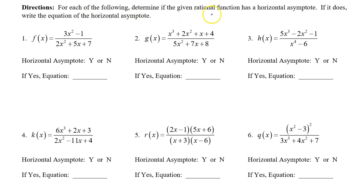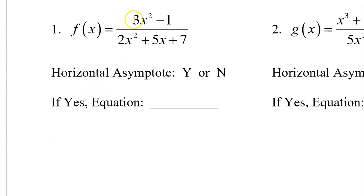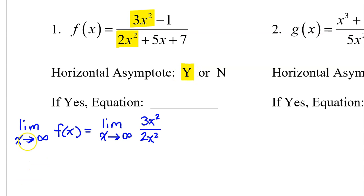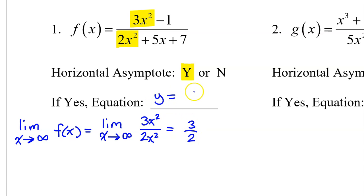For each of the following, determine if the given rational function has a horizontal asymptote. If it does, write the equation of the horizontal asymptote. For number 1, we notice that the degree of the numerator and the degree of the denominator are the same. So yes, there will be a horizontal asymptote because the right end behavior will equal the limit as x approaches infinity of 3x squared over 2x squared, the quotient of the leading terms. The x squared and x squared cancel each other out and we are left with the limit equals 3 over 2. So that's the end behavior, and since it is a constant, we have a horizontal asymptote at y equals 3 over 2.